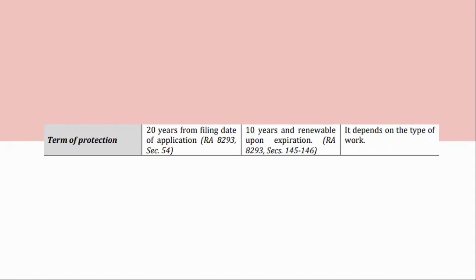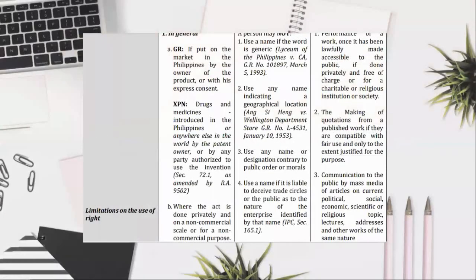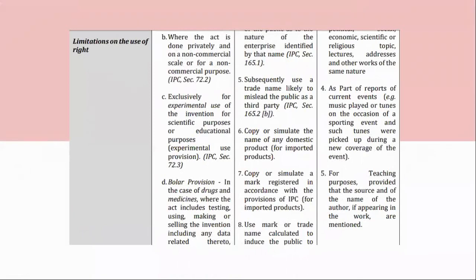Limitations on the use of patent rights. (1) General rule: if put on the market in the Philippines by the owner of the product or with his express consent. Exception: drugs and medicines introduced in the Philippines or anywhere else in the world by the patent owner or by any party authorized to use the invention, Section 72.1 as amended by RA 9502. (B) Where the act is done privately and on a non-commercial scale or for a non-commercial purpose, IPC Section 72.2. (C) Exclusively for experimental use of the invention for scientific purposes or educational purposes — Experimental Use Provision, IPC Section 72.3. (D) Bolar Provision: in the case of drugs and medicines where the act includes testing, using, making or selling the invention including any data related thereto.